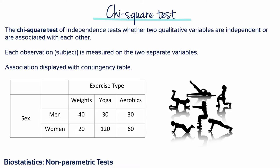A relationship would indicate the level of one qualitative variable occurs regularly with the level of the other qualitative variable. An example of a relationship between two qualitative variables is sex and baldness — baldness is much more common in men compared to women. To display a relationship between two quantitative variables, a scatterplot is used. For two qualitative variables, a contingency table is used, which shows the number of people that possess the attribute for each of the levels of both variables.